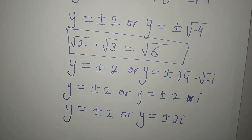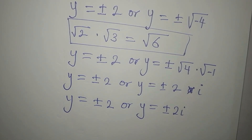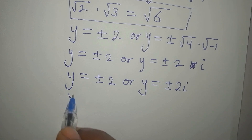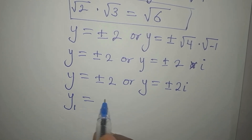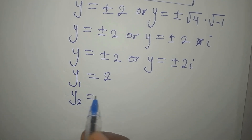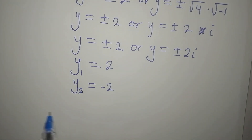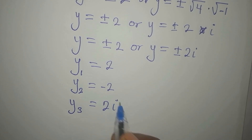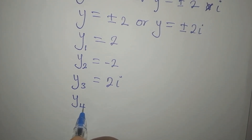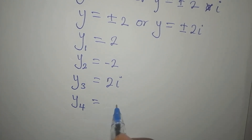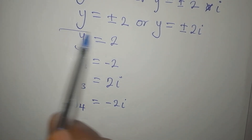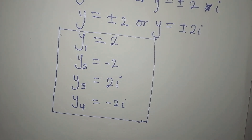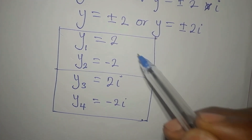Do not forget what the question says — get the four solutions. These are two 2-in-1 solutions. So y1 equals positive 2, y2 equals negative 2, y3 equals positive 2i, and y4 equals negative 2i. These are the four solutions to the equation. If you follow any shortcut, you will not be able to get all four solutions — you would only get the first two.